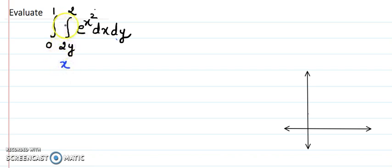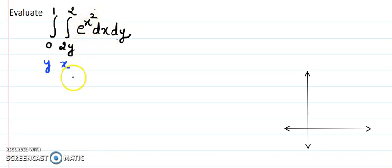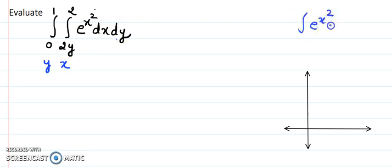I see the limits are in y, so this tells me that the inner limit is for x and the outer limit is for y. So I have to do the integration of x first. Now, looking at the integrand, e to the power x² is the function to be integrated with respect to x from 2y to 2. But I am stuck here — integration of e to the power x² with respect to x is not possible.